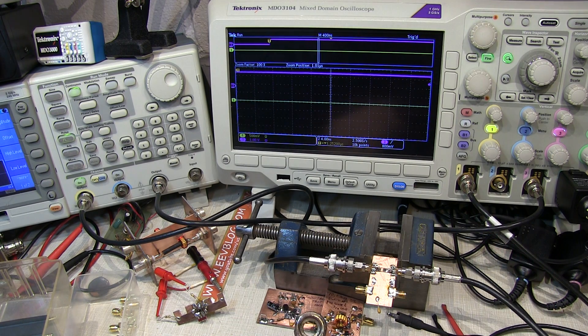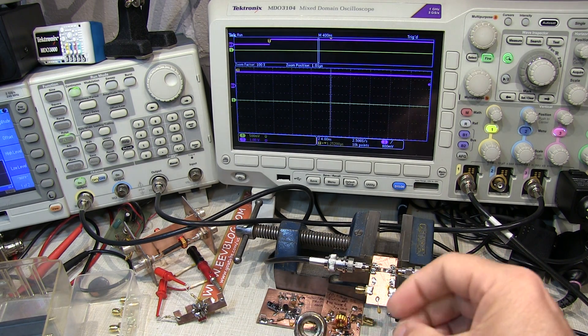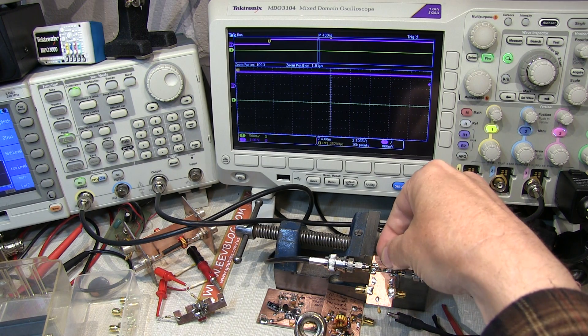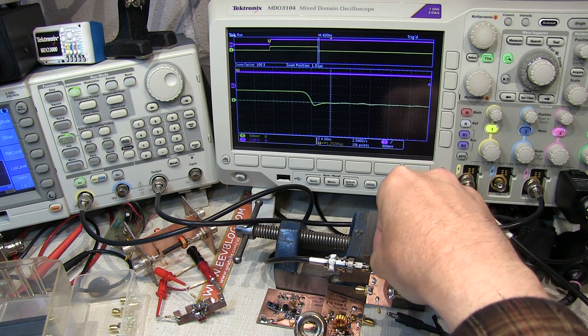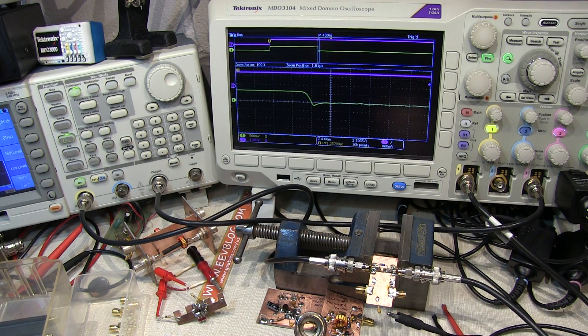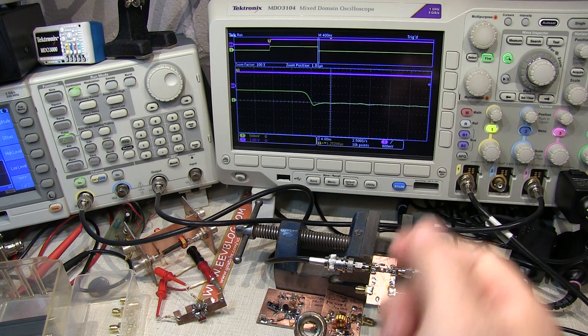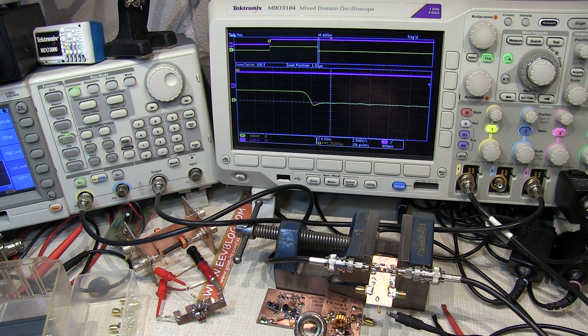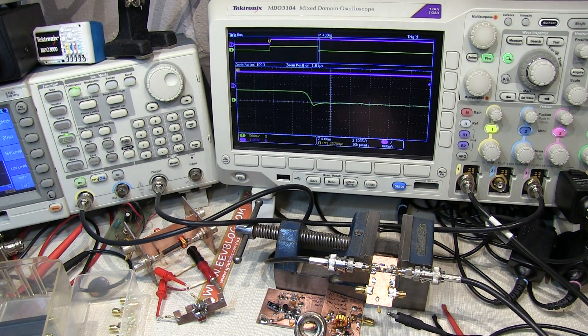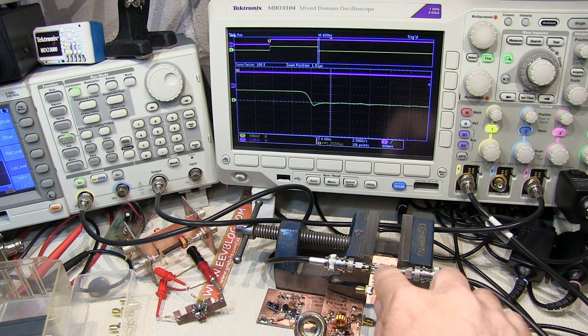Now Schottky diodes, on the other hand, since they don't have a PN junction per se, they don't have the same stored charge. So if I stick this 1N5711 Schottky diode in there, we see just a very slight undershoot here. And that's probably more due just to reflections and stuff in my fixture as opposed to any real reverse recovery.